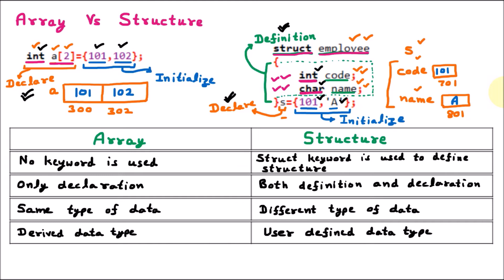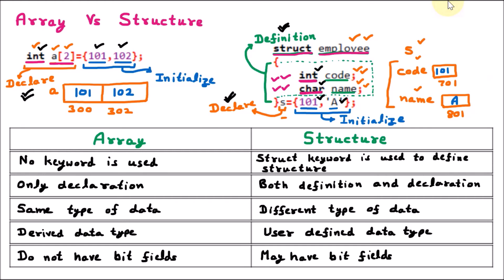The next difference between array and structure is that array does not have bit fields, but structure may have bit fields. Bit fields mean specifying size in bits to save memory. When we store something in bits, memory is saved — that is a bit field. Structure can have bit fields for memory efficiency, but that is not possible with array. So array does not have bit fields, but structure may have bit fields.